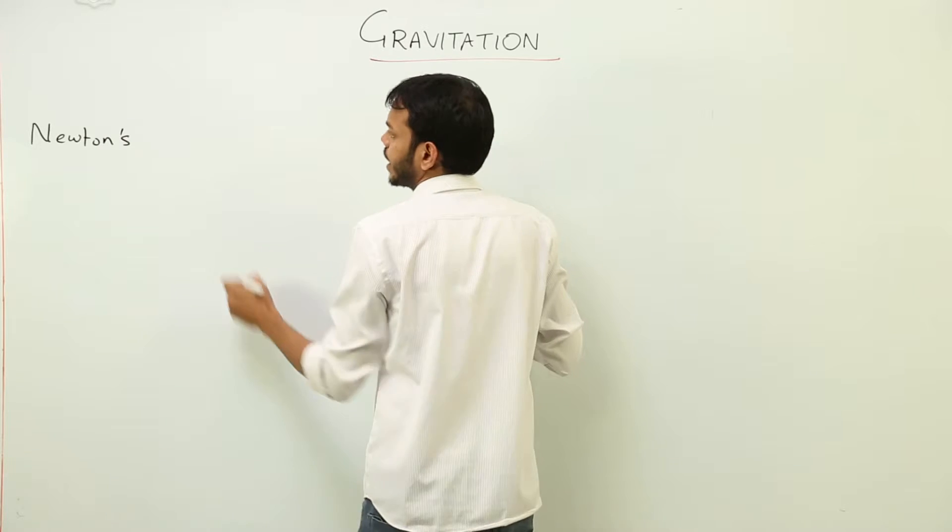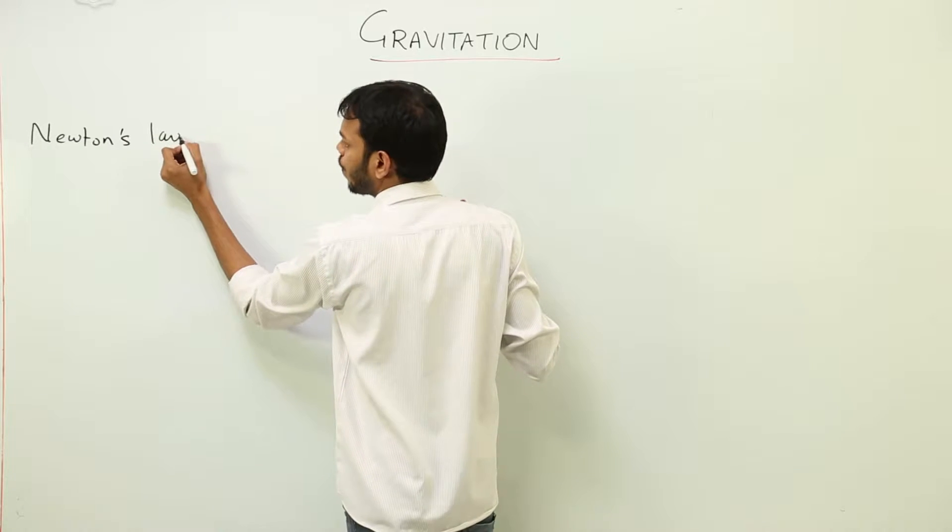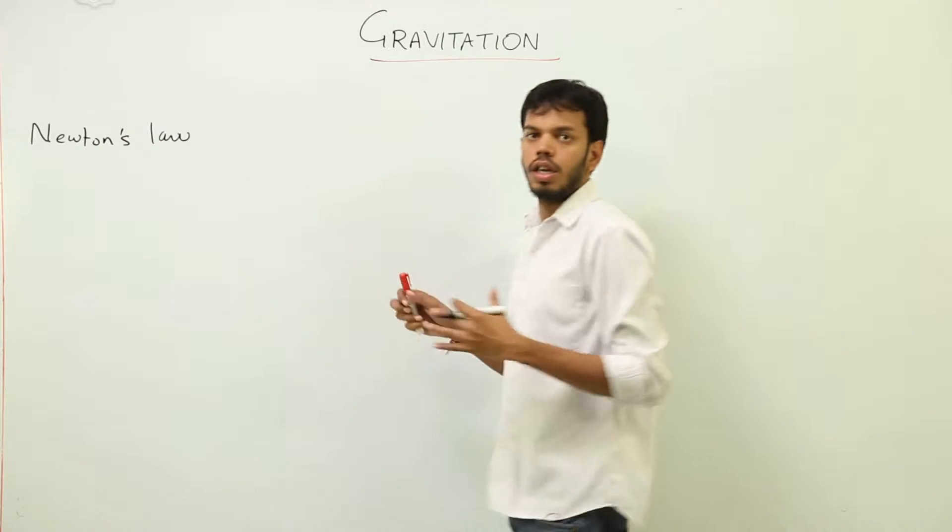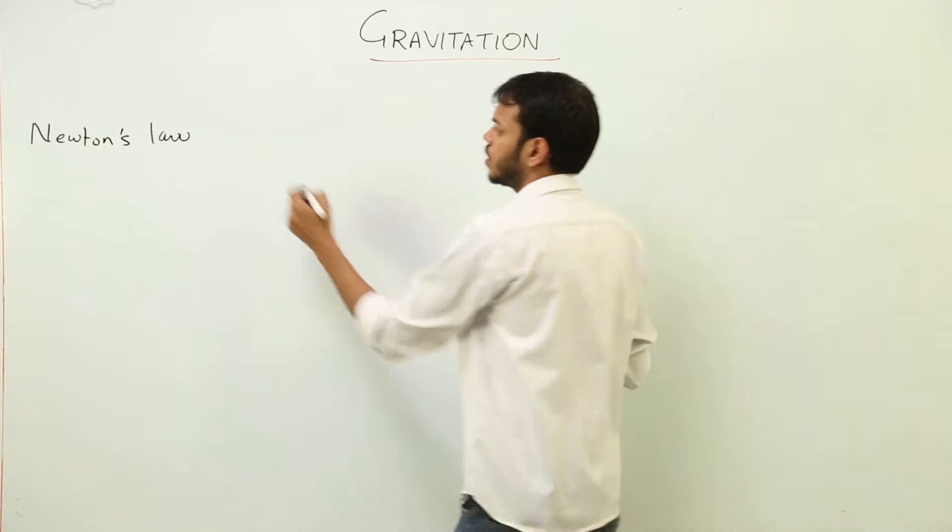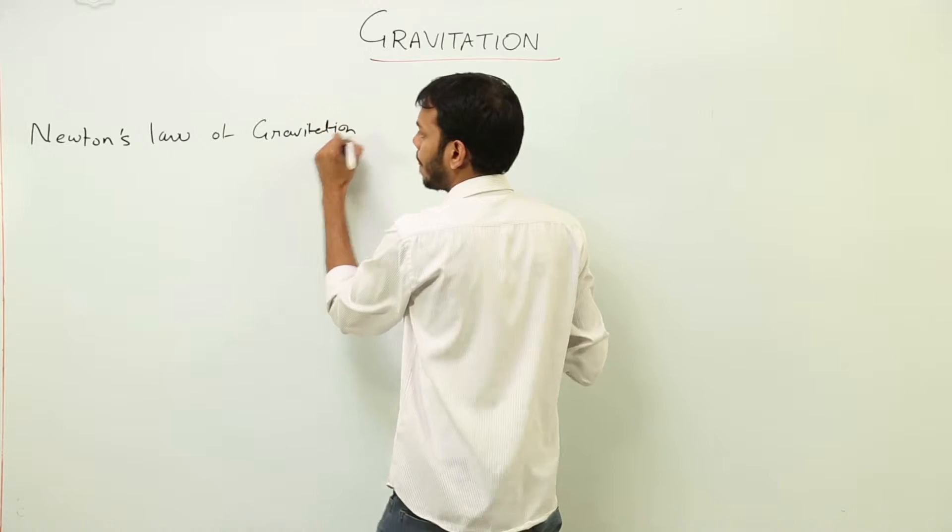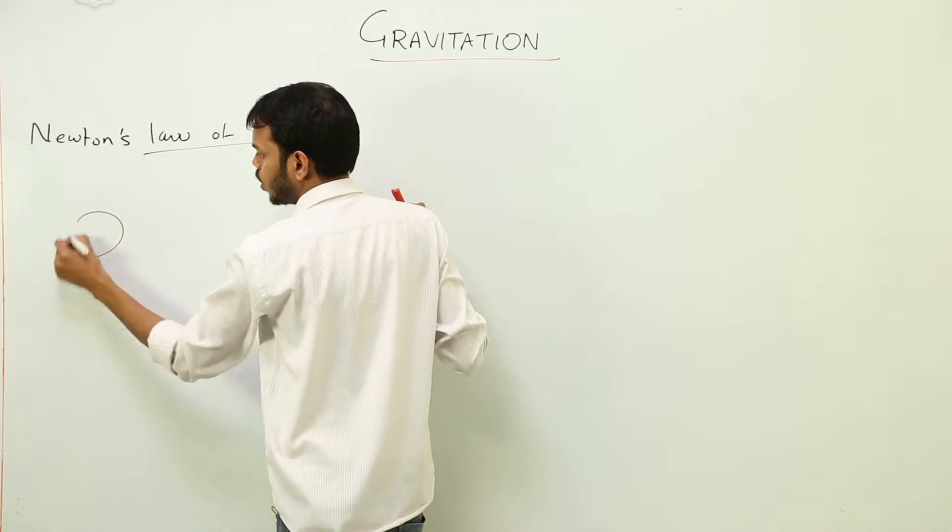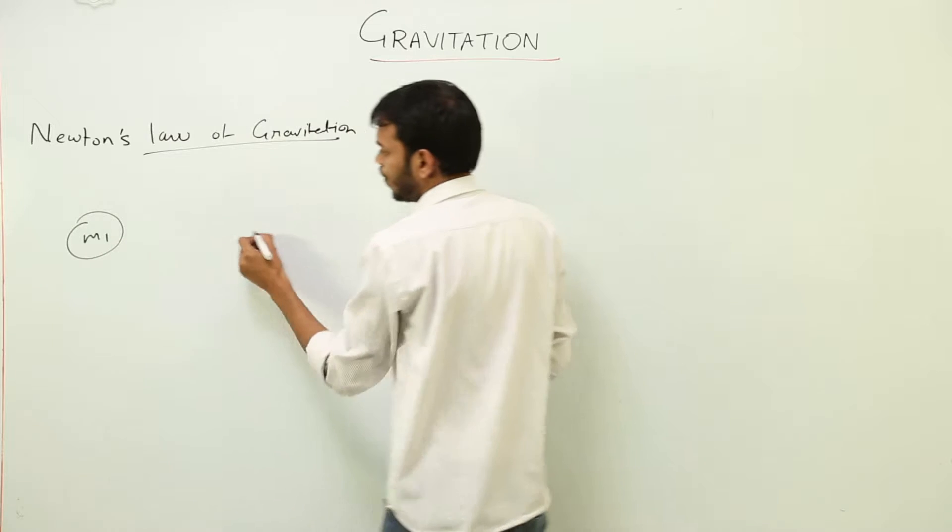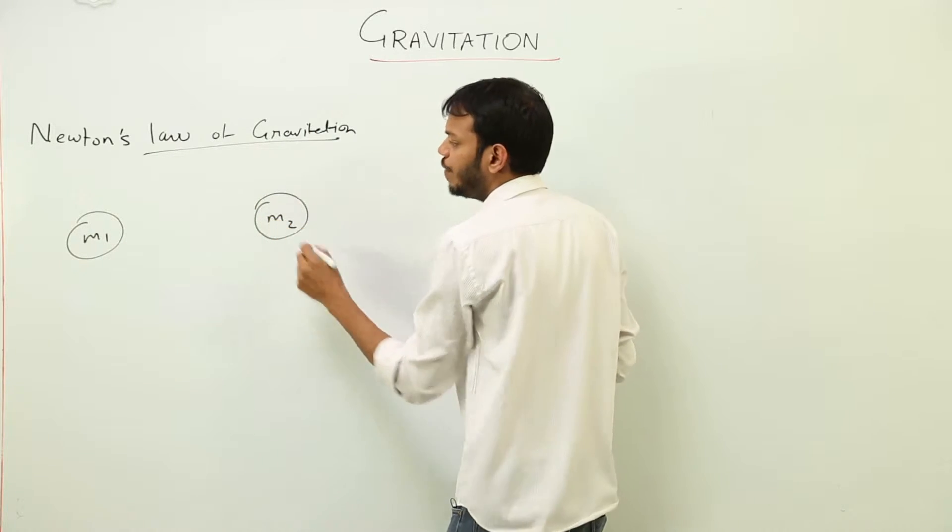What does this law state? Newton's law of gravitation, or Newton's gravitational law. According to this law, suppose these are two bodies M1 and M2, let them be present anywhere in the universe.